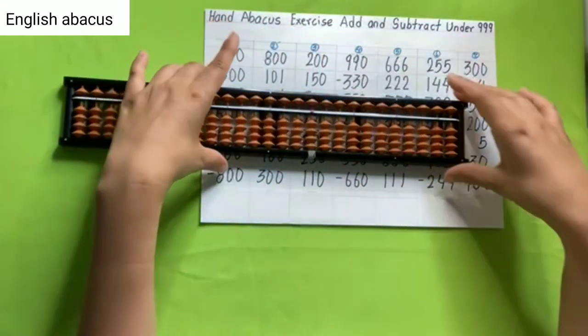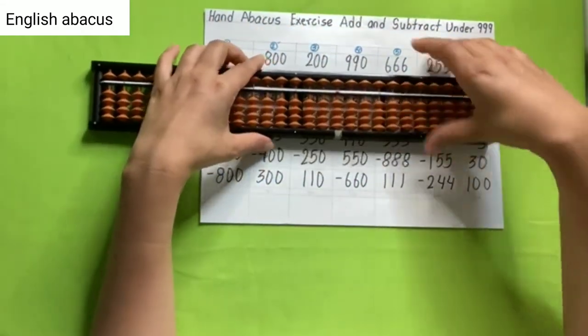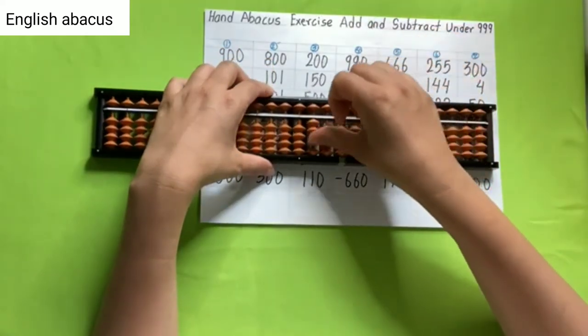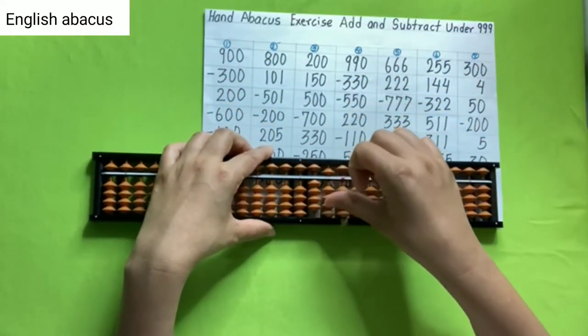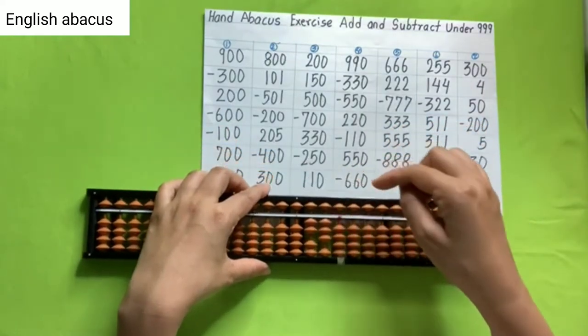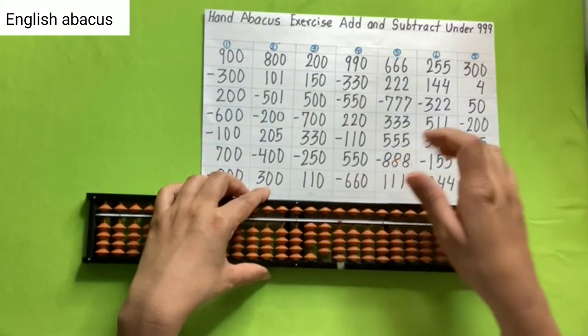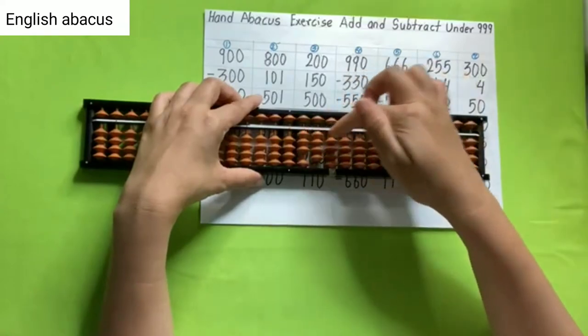So you have to reset your abacus after an equation. 200, 150, 500, reduce 700, add 330, reduce 250, add 110, and your answer is 340.